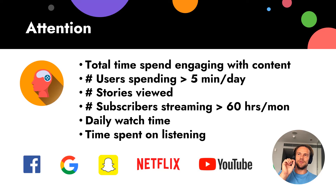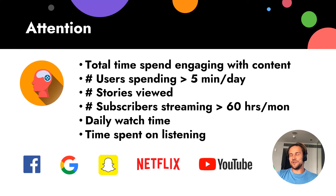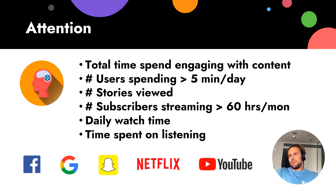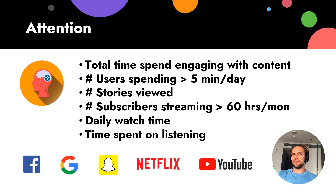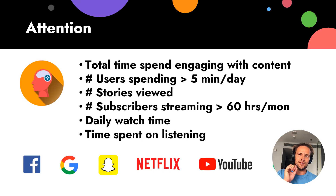To increase Netflix's Northstar metric, you need subscribers streaming more than 60 hours per month — only very active subscribers. For YouTube, it's simply daily watch time: how much all users together spend watching video. The more they watch, the more investors earn and the whole ecosystem grows. And Spotify tracks time spent listening — similar to YouTube and Facebook — they all fight for attention.